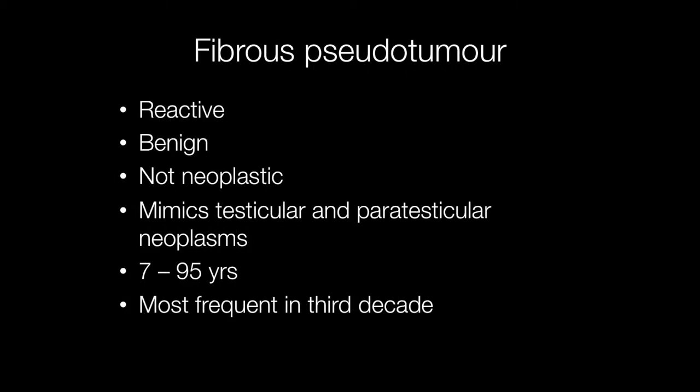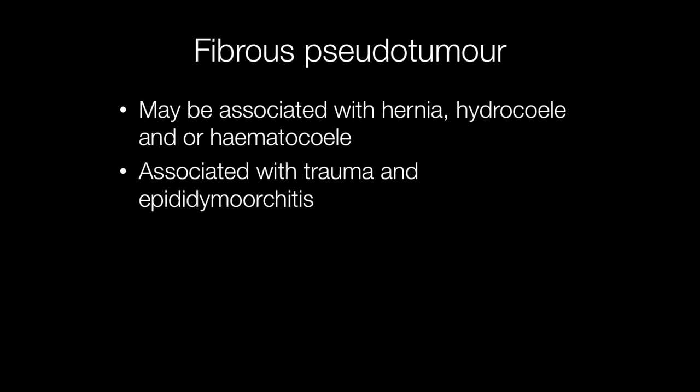Fibrous pseudotumour is a reactive lesion. It is benign, not neoplastic, but may mimic testicular and paratesticular neoplasms. They have been reported to arise between the ages of 7 and 95, but the most frequent age is in the 20s. Fibrous pseudotumours may be associated with hernias, hydroceles, and/or hematoceles. They are also associated with trauma and epididymal orchitis.